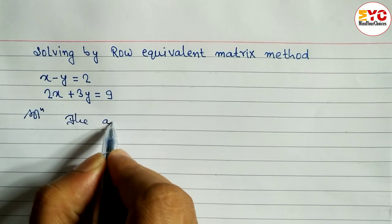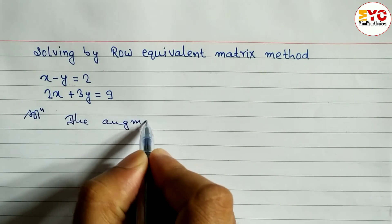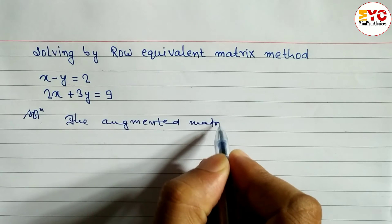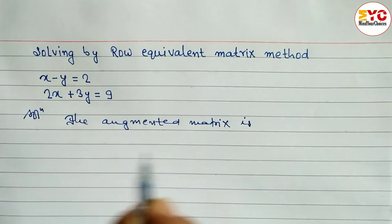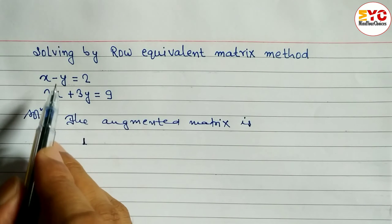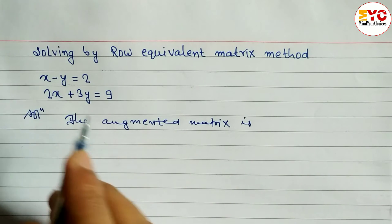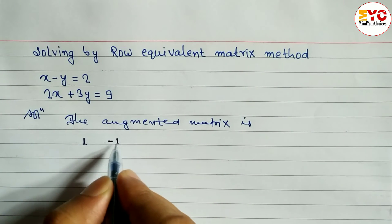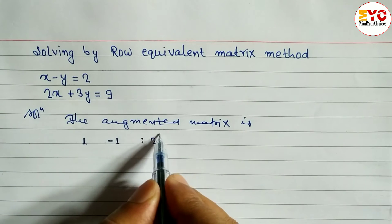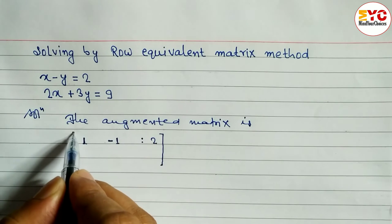The augmented matrix is, we have to write down the coefficient. What is the coefficient of x? 1. So we have to write down 1. Coefficient of y is equal to minus 1. We have to write minus 1. And here constant number is 2. So we have to write down 2, which is inside matrix.